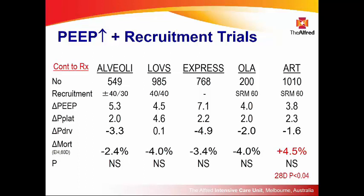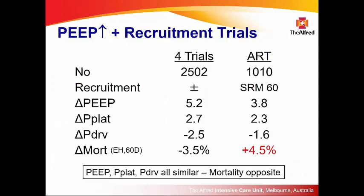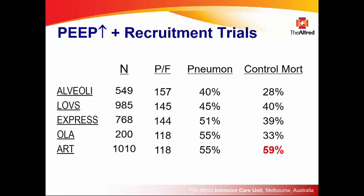Looking at these trials in terms of changes from control to treatment: PEEP goes up in all trials, plateau pressure rises similarly, and driving pressure reduces slightly — yet mortality trends are opposite. ART, with a thousand patients, shows a mortality increase, while two and a half thousand patients across other trials with very similar changes show the opposite. Comparing baseline characteristics: PF ratios are similar, percentage of pneumonia is slightly higher in ART, but control group mortality in all previous trials was below 40% — in ART it was strikingly higher.